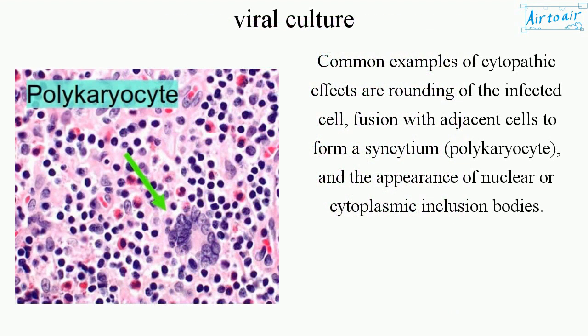Common examples of cytopathic effects are rounding of the infected cell, fusion with adjacent cells to form a syncytium or polykaryocyte, and the appearance of nuclear or cytoplasmic inclusion bodies.